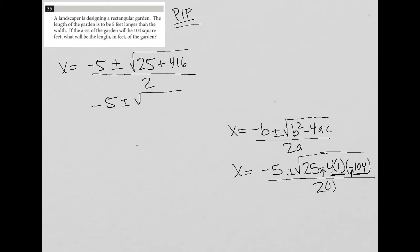and then I have negative five plus or minus the square root of 25 plus 416 is 441, all over 2. Then I'll go to my calculator and just see, what is the square root of 441? So let's try that out. That's equal to 21, so it's a perfect square.